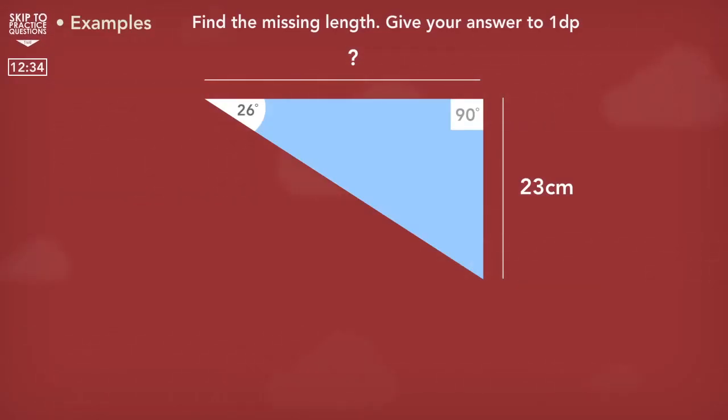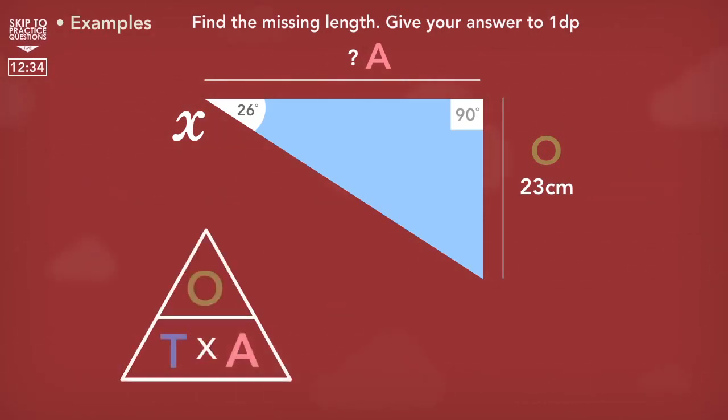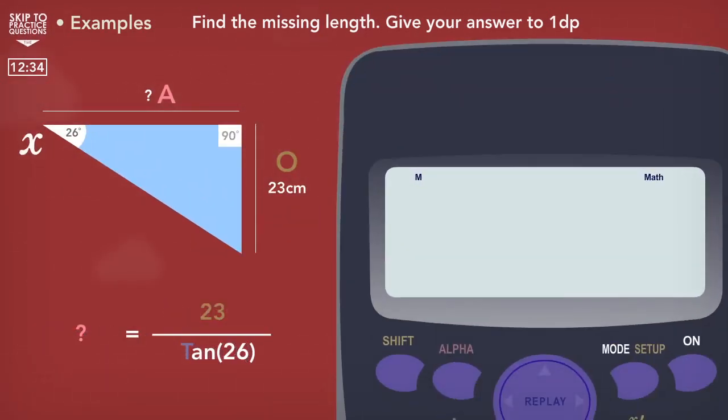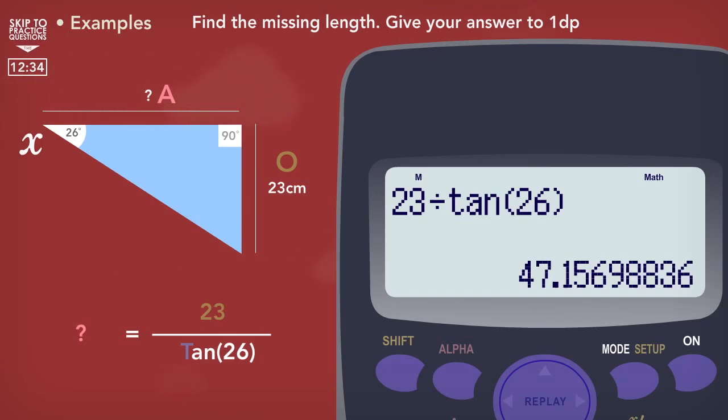Here's another question. Pause and try it for yourself. Like always, we label what we know and what we want to know on the triangle. The opposite length and an angle is known. The unknown length will be the adjacent. Looking at the three equations, tan has an adjacent and an opposite. And since we're trying to find the adjacent, we start by covering the adjacent on our triangle. What we are left with is the opposite divided by the tan of the angle. So putting these values into our calculator, we are going to do the opposite divided by the tan of the angle, and we should get this as our final answer.